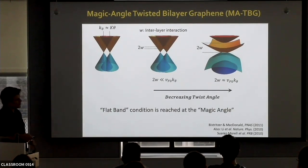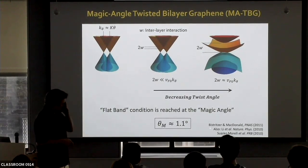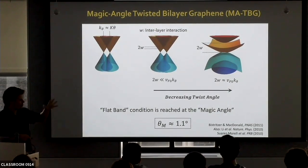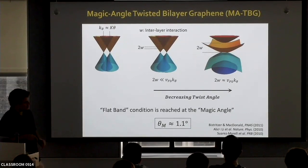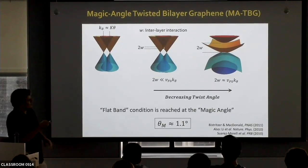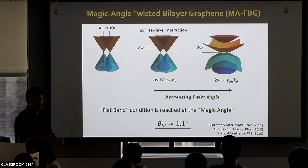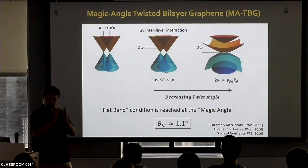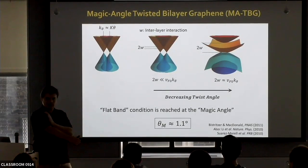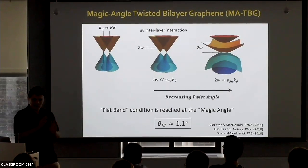I have to mention that there was also earlier theoretical work that had calculated this angle — they got 1.5 degrees, a bit off, but they were already talking about flat bands. And there were also experimental indications from the group of Yves Lemasson, who did scanning tunneling microscopy studies of twisted bilayer graphene. They saw a van Hove singularity in the density of states — a peak in the STM spectra — and extrapolated that it would be zero at 1.16 degrees, suggesting that 1.1 degrees should be something special.